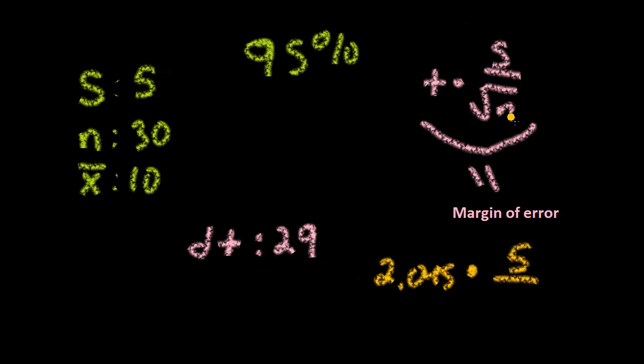So 5 divided by the square root of our sample size, 10, or sorry, 30. Square root of 30. And this will give us the margin of error.